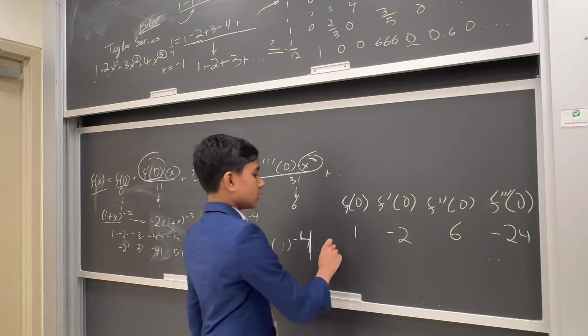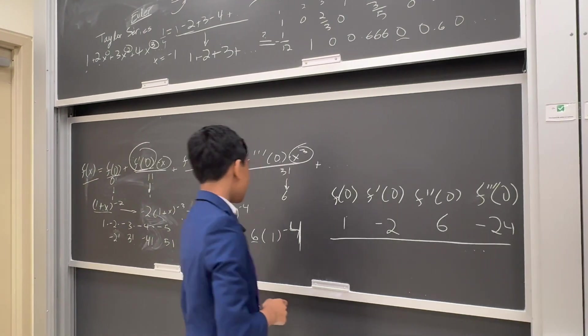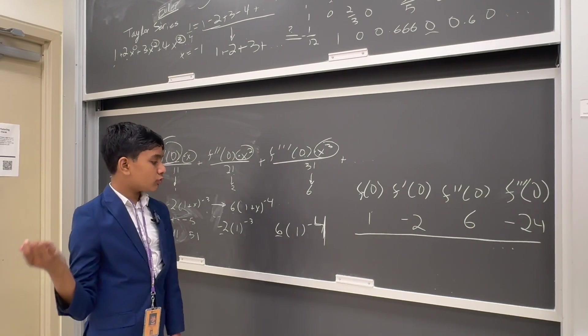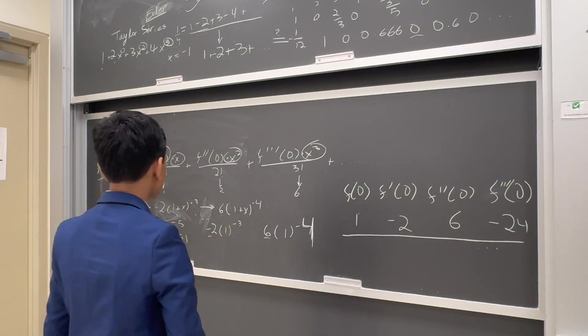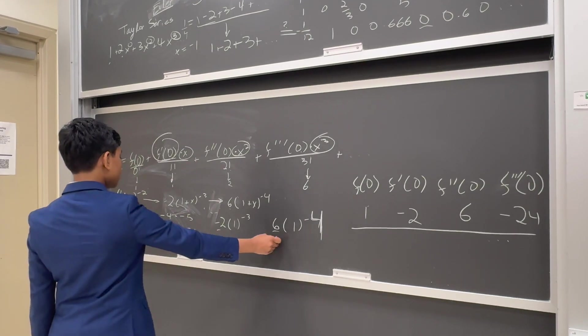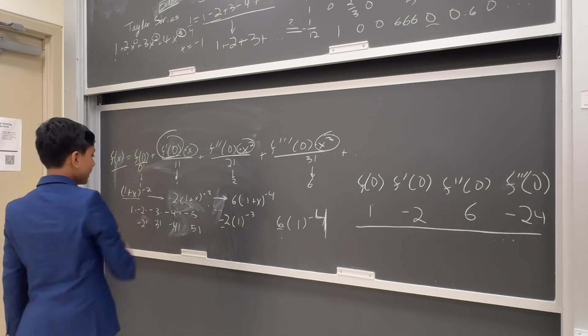So Euler was searching for this, and he found it in 1 over (1 plus x) squared. So then, we apply this all to get...